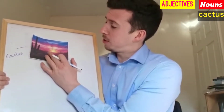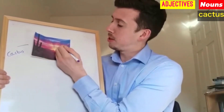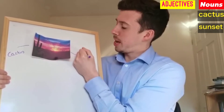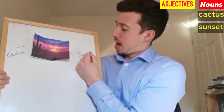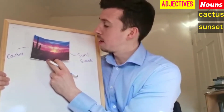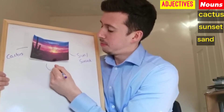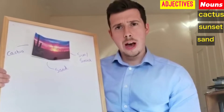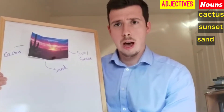The first noun I can see is the cactus. We also have the sun, or the sunset. And it's quite difficult to see, but we might also talk about the sand. So we've got: cactus, sand, and the sun/sunset.